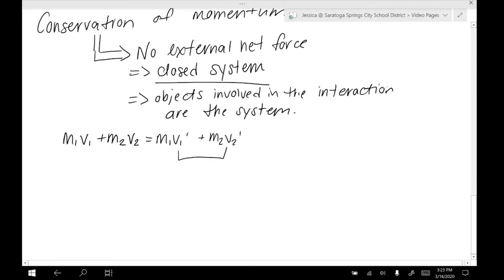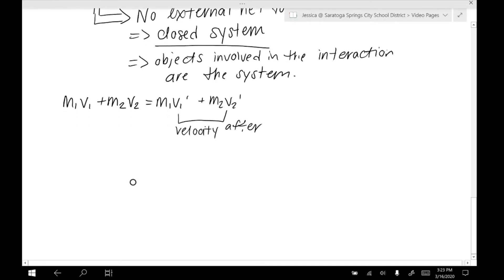The major conservation of momentum equation we use is m1v1 plus m2v2 equals m1v1-prime plus m2v2-prime. Remember that the prime just means velocity after. With this equation, there are a few things to keep in mind.